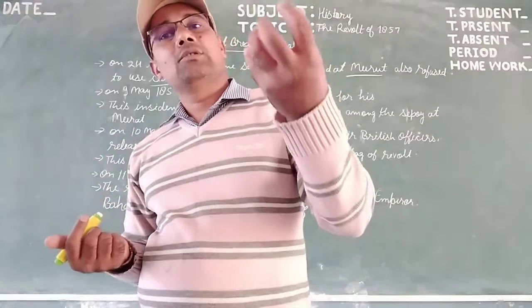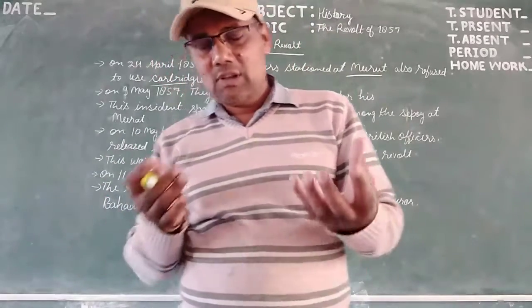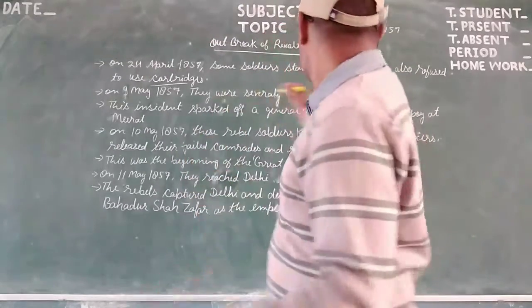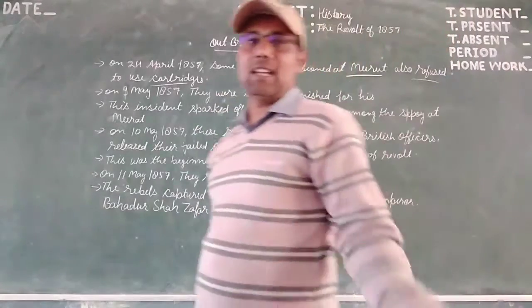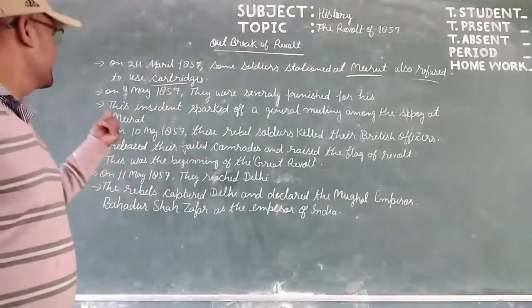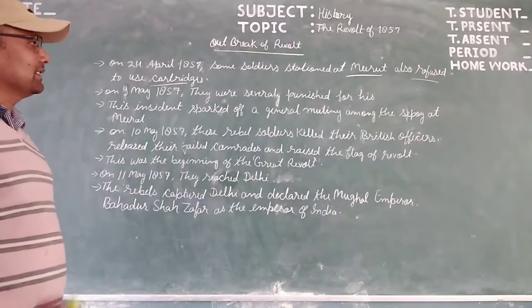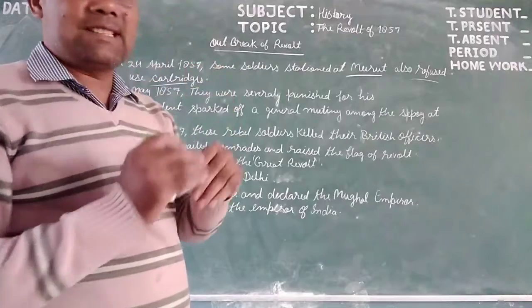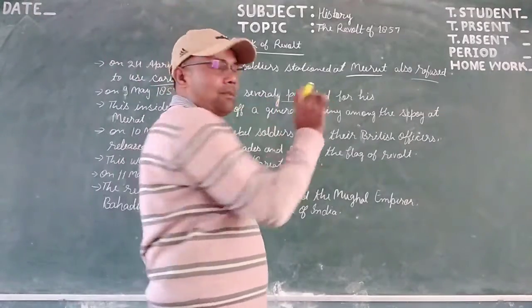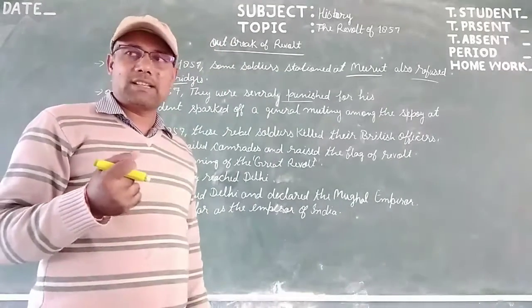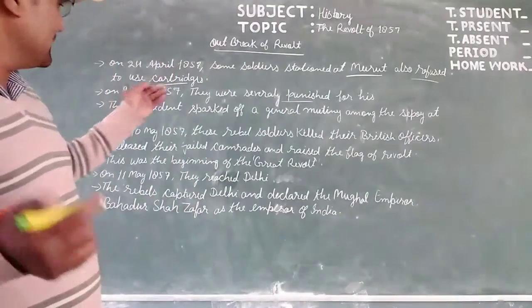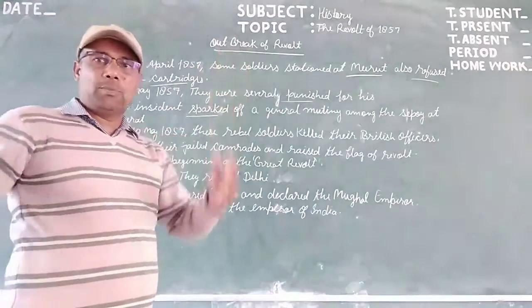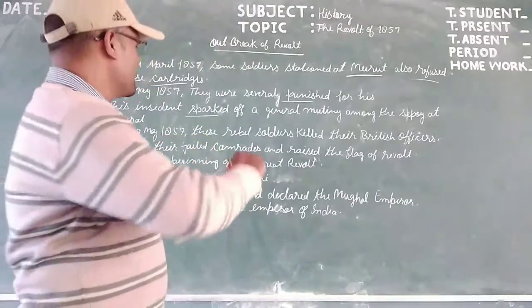The Indian soldiers refused to use the cartridges. On 9 May 1857, several were punished for this. This punishment sparked